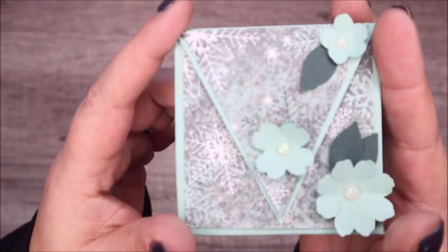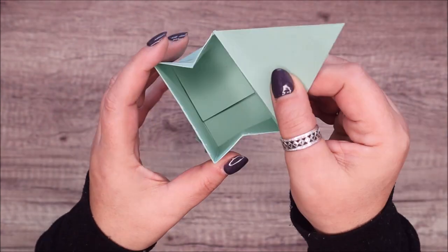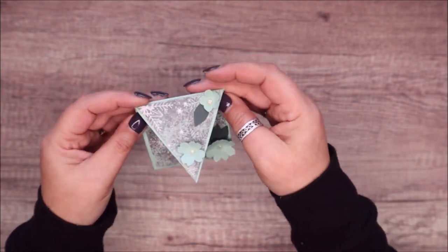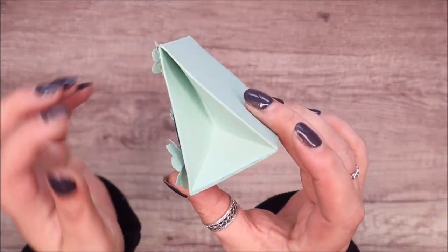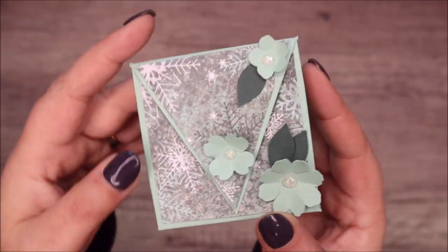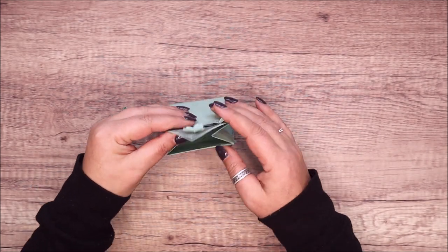So this is the project we're making today. It's lovely. It's a triangular treat box. I designed this ages ago, long before the retiring list came out, which is why I've got the outgoing mint macaron on here, which I'm going to be very sad to say goodbye to, but also Texture Chic paper. That's going to. So if they haven't already gone, go and get them now because they're both lovely.